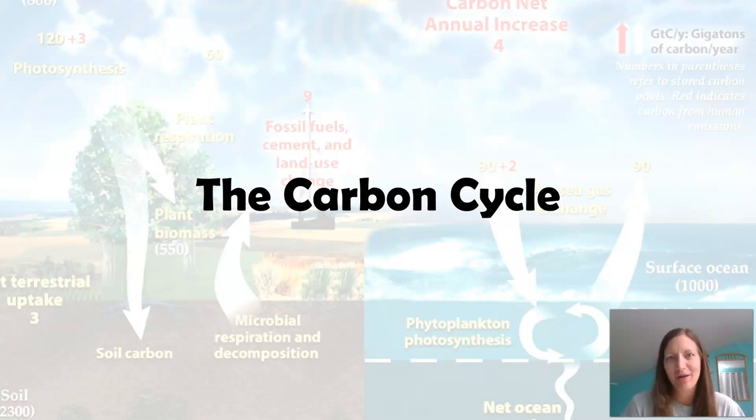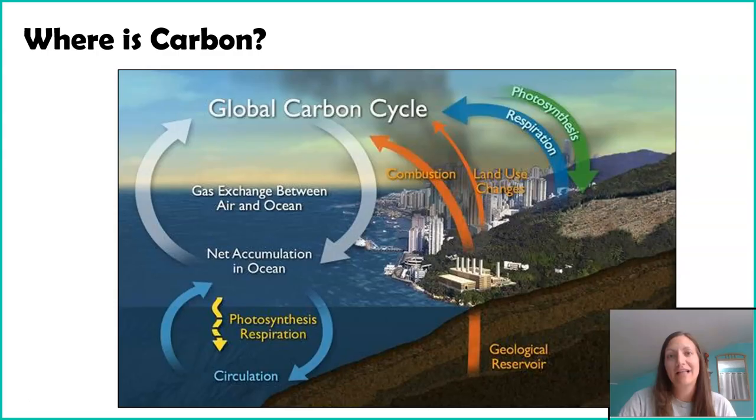Before we even start talking about climate change, it's really important to just understand the carbon cycle. We're not going to talk about different types of carbon or different elements of carbon, but really just thinking about where carbon is found on our earth and how it moves from location to location. This is really going to provide a foundation for understanding climate change. So let's first just talk about where in the world we find carbon. I mean, the short answer is everywhere.